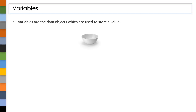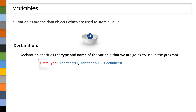Variables are the data objects which are used to store a value in them. We can manipulate the value in a variable while the program is in execution. In order to use a variable in our program, first we should declare a variable. Declaration specifies the type and name of the variable that we are going to use in a program.